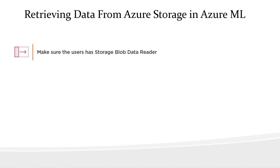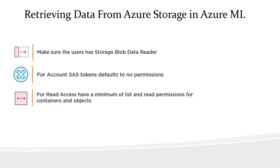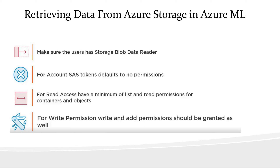It's important to understand how to manage permissions to access data from Azure Storage. First, you need to make sure the user has Storage Blob Data Read to access blob storage. By default, the account SAS has no permissions until you grant one. To grant read access to the container and objects, grant the list and read permission. For write access, grant write and add permission.